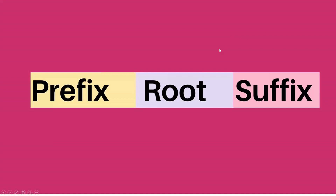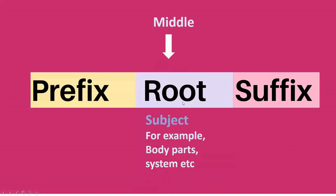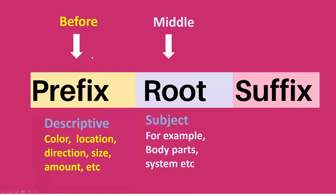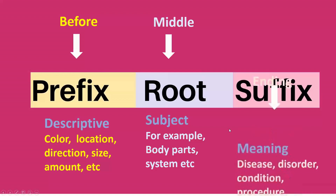Most medical terms can have three segments. The middle one is a root — generally the root is the subject, for example body parts or systems. Before the root there is a prefix, which is descriptive such as color, location, directions, size, amount, etc. And after the root is the suffix, which is the ending one.